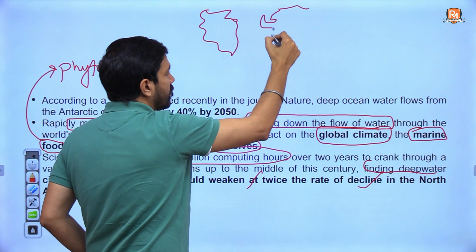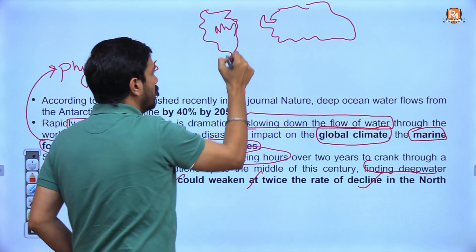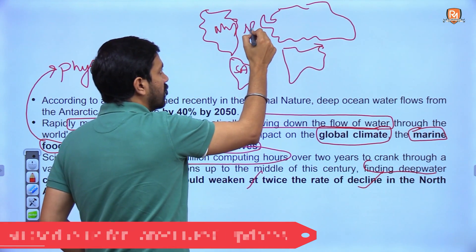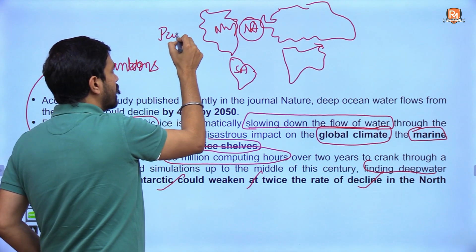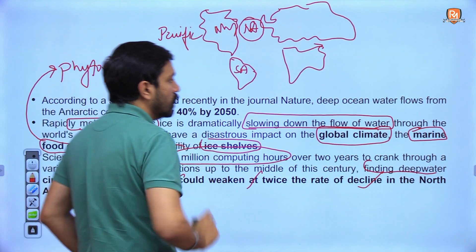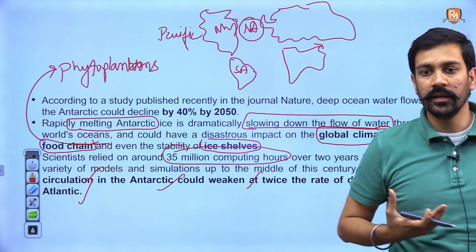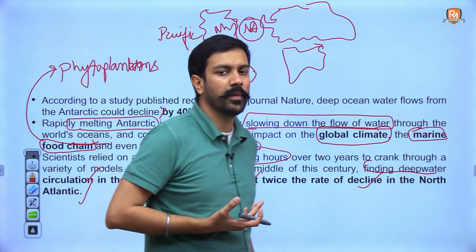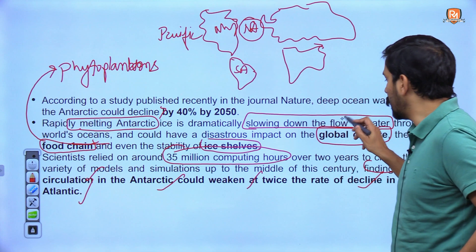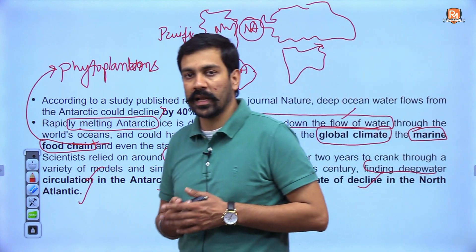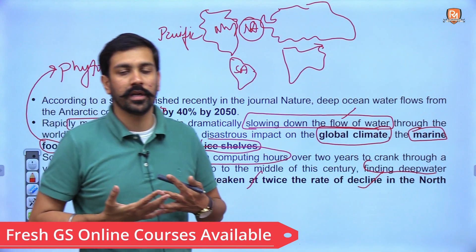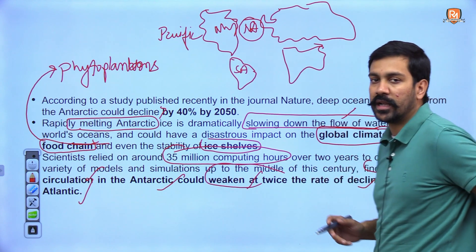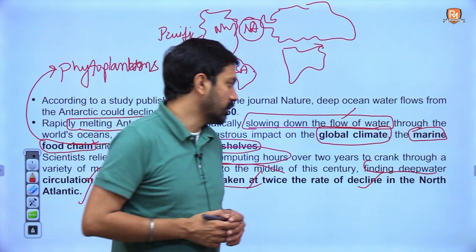If we make a rough map — here is Europe, North America, Southern America, and Africa — this is the northern Atlantic Ocean, and on the other side is the Pacific Ocean. The news highlights that rapid melting of ice sheets due to global warming can slow down deep water ocean flows, impacting global climate, marine food chains, and ice shelf stability, at twice the rate occurring in the northern Atlantic.